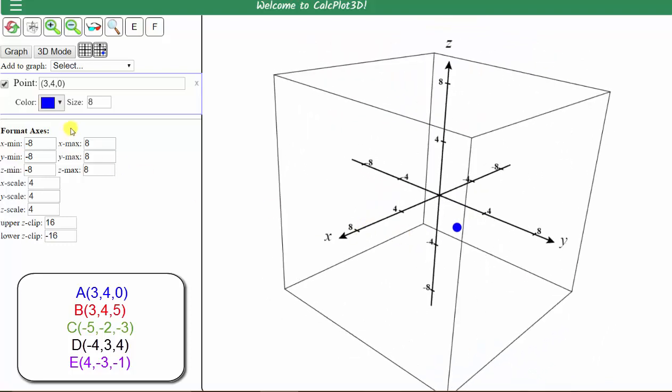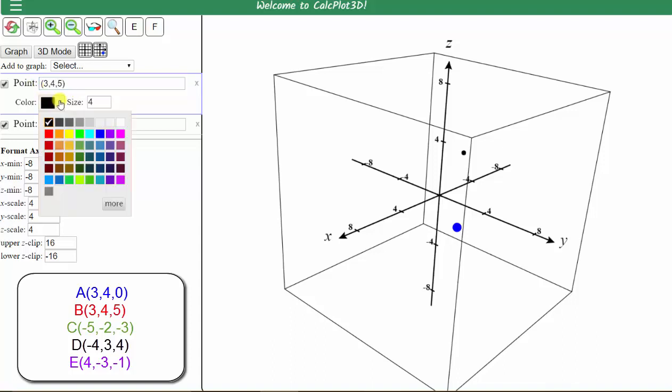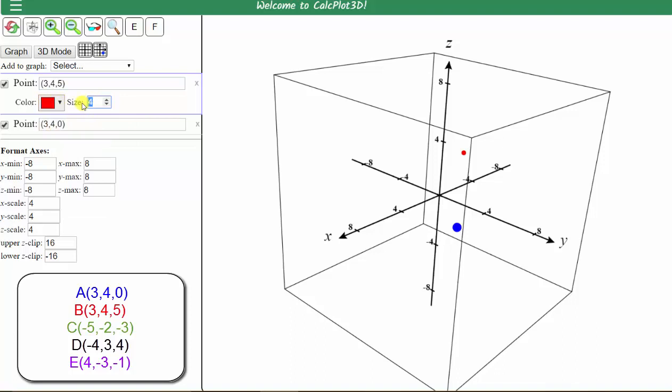Let's go ahead and plot the next order triple, which is (3, 4, 5). Let's graph this point in red. To the right of add to graph, click the arrow, select point, enter the order triple: 3, 4, 5. Let's change the color to red and change the size to eight. Click graph, and now the point is graphed in space.